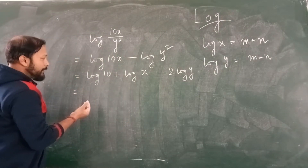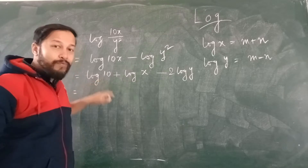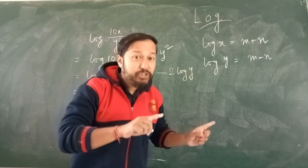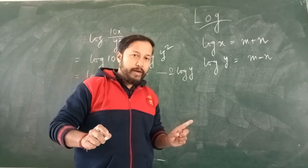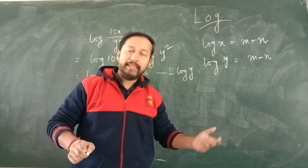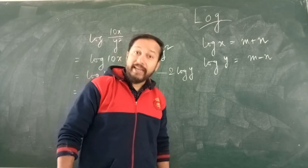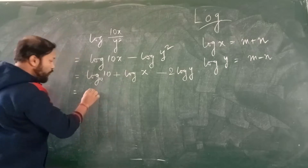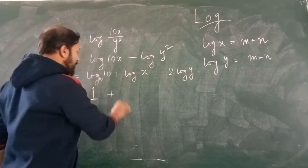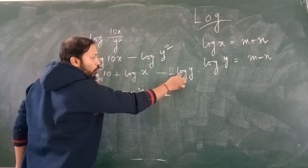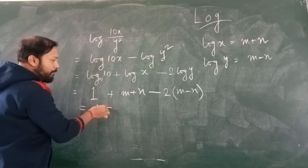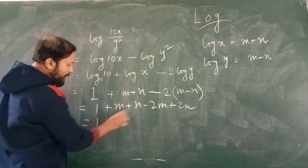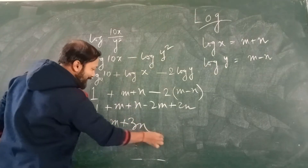Now, log 10 — there is no base written, so it is common log, meaning base 10. When argument and base are both 10, the answer is 1. So we have 1 plus log x. Log x equals m+n, so that is m+n. Minus 2 times log y. Log y equals m−n, so that is 2(m−n). Simplifying: 1 + m+n − 2m+2n, giving 1 − m + 3n as the answer.